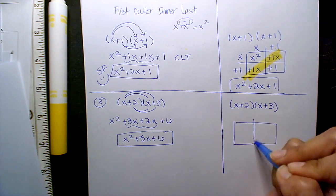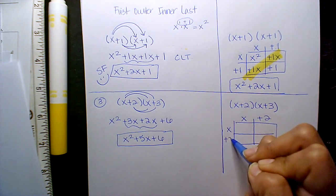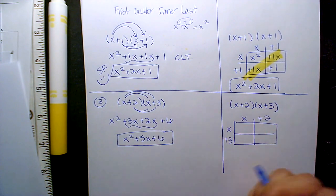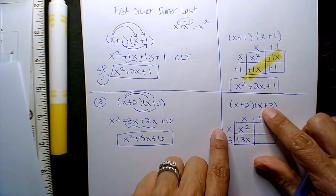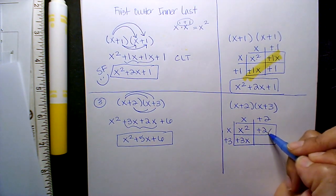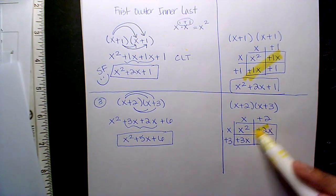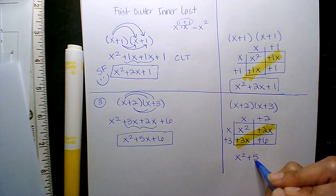If you prefer the box method, just pick your preference. Each cell is row times column. It's a product. So x squared, 3x, 2x, and then 3 times 2 is 6, and we'll get the same four terms.